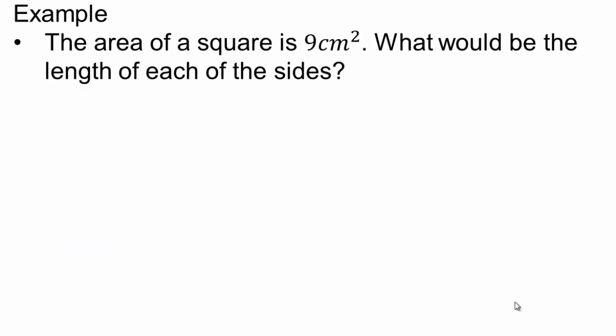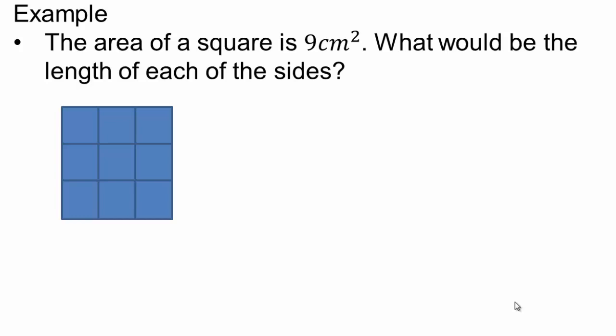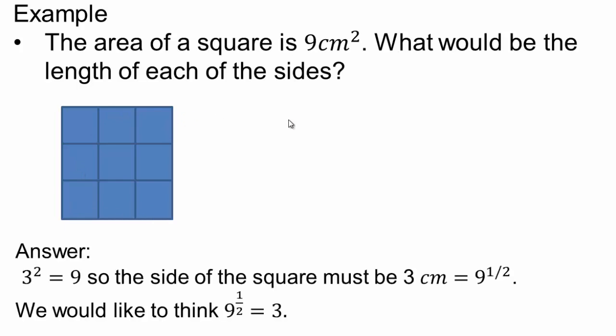Let's take an example. If the area of a square is 9, what is the length of each side? Here's my square. To get the length, first I need to know what 9 is made up of. If it's a square, I make a square grid and I get 1, 2, 3, 4, 5, 6, 7, 8, 9. So this is my 9 square centimeters. Each square is a square centimeter and there are 9 of them — 3 times 3. So the length of the side would be 3 centimeters.